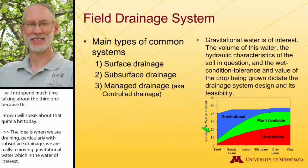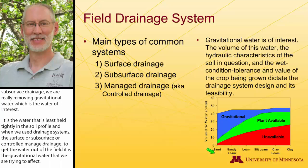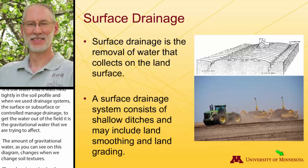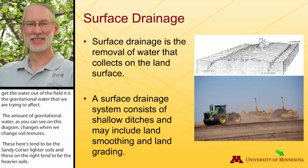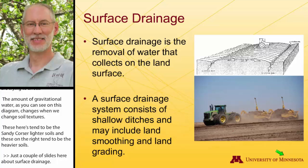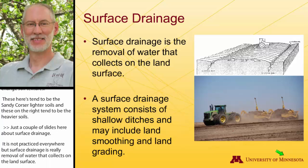The amount of gravitational water changes when we change soil texture, as you can see on this diagram. Those on the left tend to be the sandier, coarser, lighter soils, whereas those on the right tend to be the heavier soils. Surface drainage is really the removal of water that would collect on the surface of the land. This is usually done with shallow infield ditches and oftentimes land leveling or land forming so that we crown those fields and allow the water to run off into those shallow field ditches and out of the field itself.